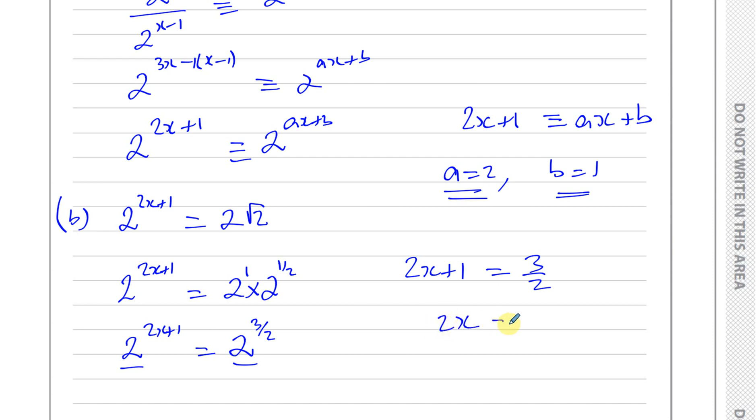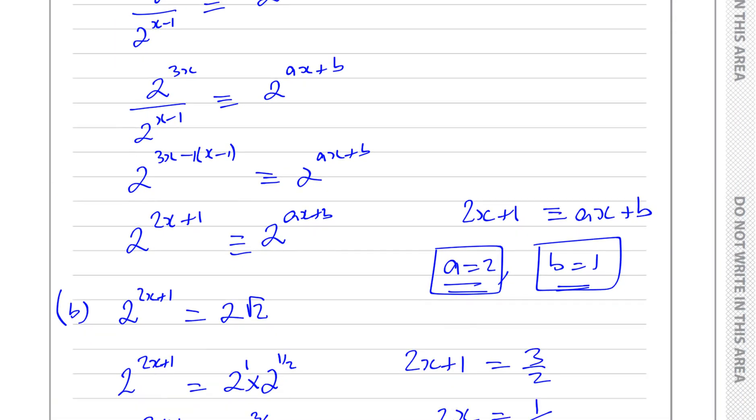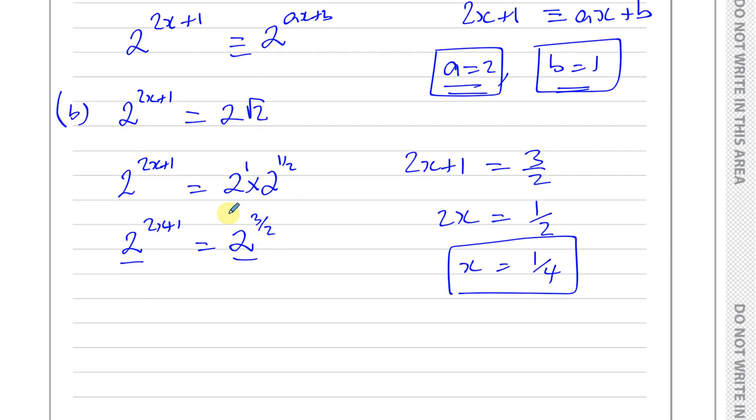To solve for X: 2X equals 3 over 2 minus 1, which is 1 over 2, so X equals a half divided by 2, which is a quarter. That's the answer. It's just about making the bases the same in index form and then comparing the powers.